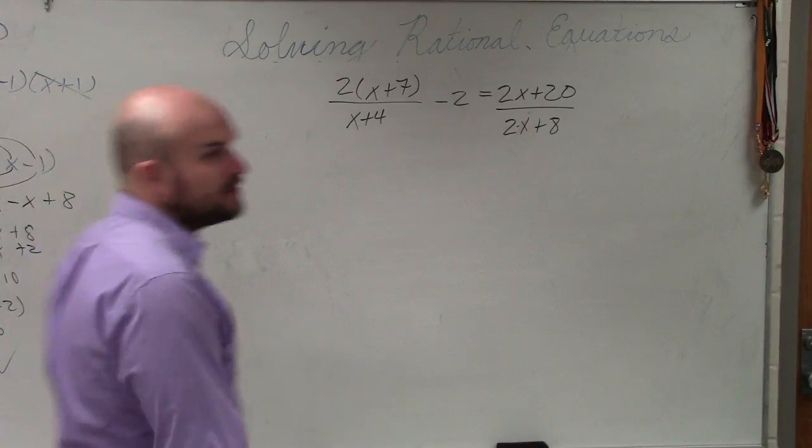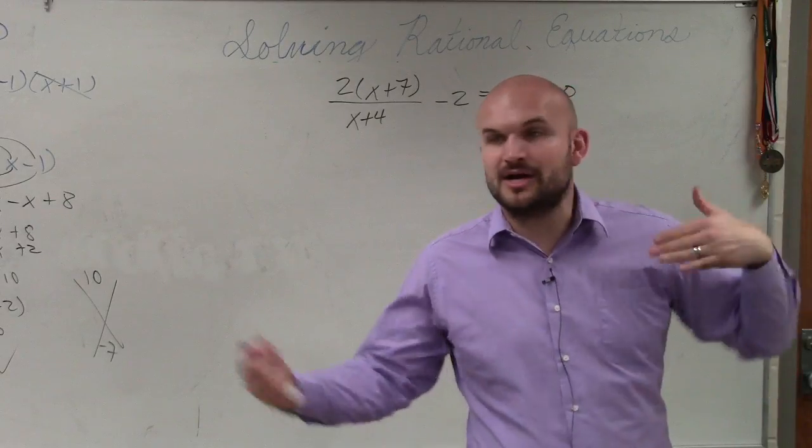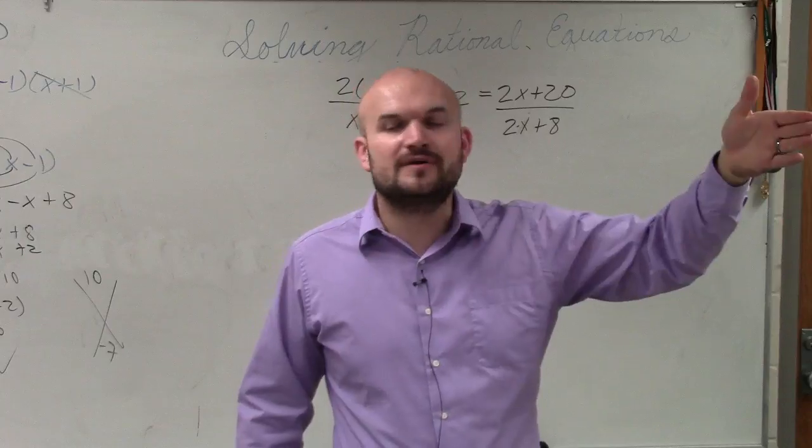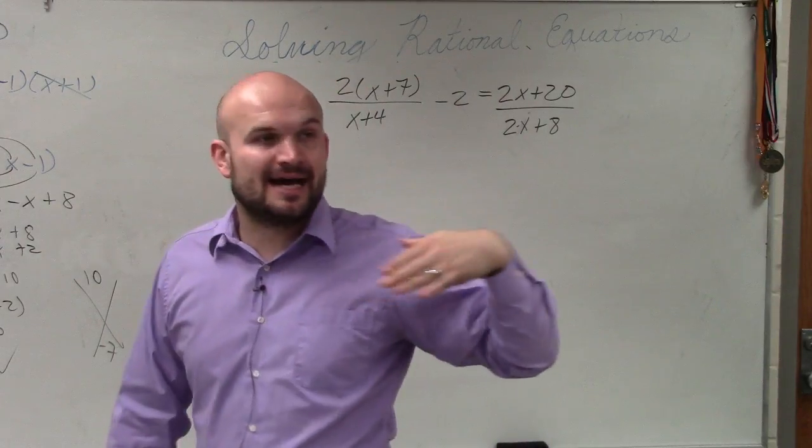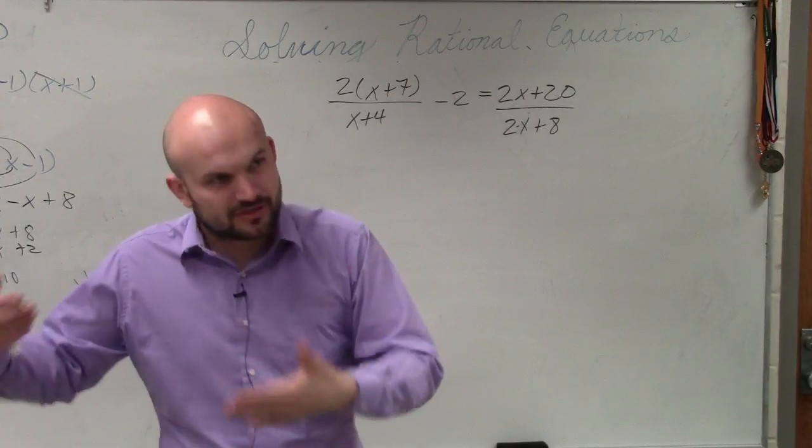So on this next one, this gets a lot of students because what they automatically want to do is multiply your two numbers. When I say what is the LCD of 2 and 9, that's 18. And then I say what's the LCD of 3 and 9? And they say 27. No, the LCD of 3 and 9 is actually 9.